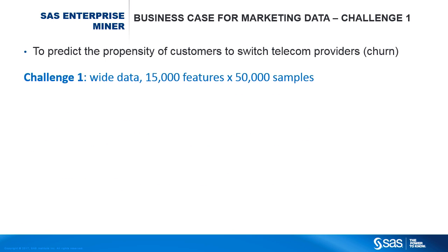The dataset consists of 15,000 features and 50,000 instances. 206 out of the 15,000 are categorical features. Although the dataset has a moderate number of instances, the number of features is quite large. And considering the multiple levels of categorical ones, this number is even larger. With so many features, you can expect many of them to be irrelevant, redundant, or noisy.